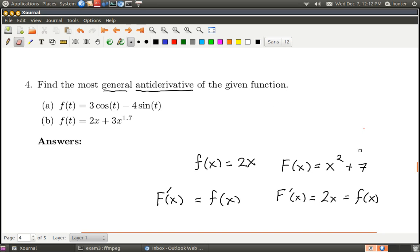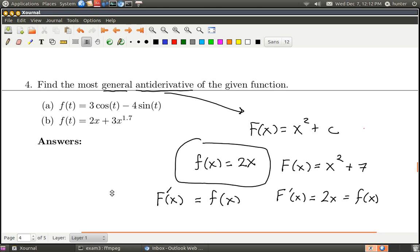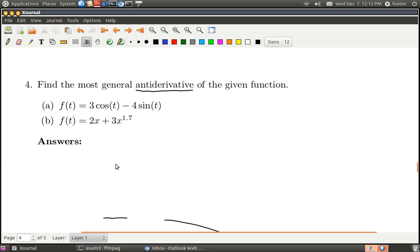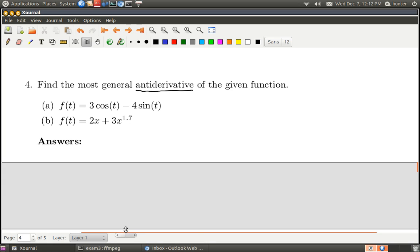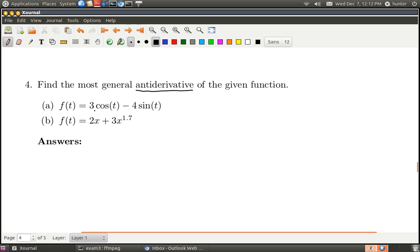So the most general antiderivative of 2x here would be F(x) equals x squared plus c. So this is the most general one. So this is what we want to do for these a and b. So slightly harder but not that much harder. In calculus 2 you're going to do antiderivatives like crazy.